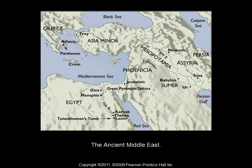This map shows the ancient Middle East, with locations of the ancient civilizations of Egypt and Mesopotamia, as well as Greece, which will be coming up in the next lesson.